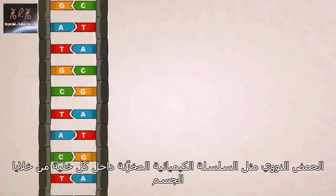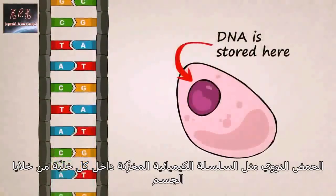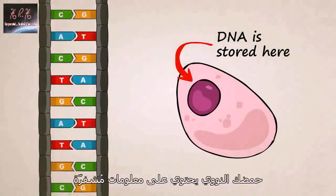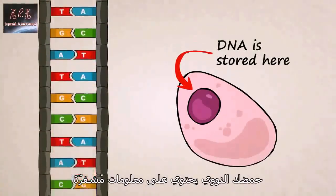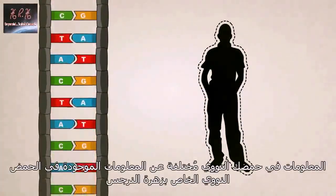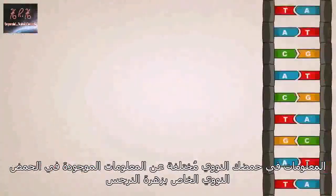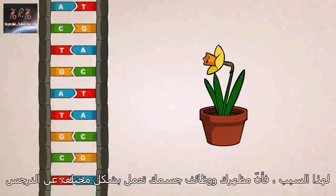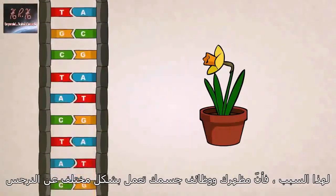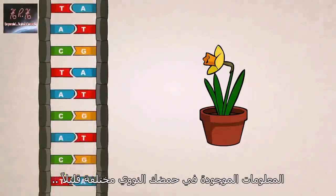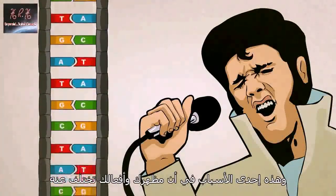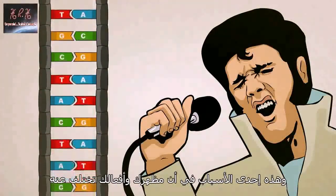DNA is a chain-like chemical stored inside each one of your cells which tells them how to grow and function. Your DNA contains coded information on how to build you. The information in your DNA is different than that of a daffodil's DNA, which is why you look and function differently than a daffodil. The information in your DNA is slightly different than that of Elvis Presley, which is one of many reasons you don't look or act quite like he did.